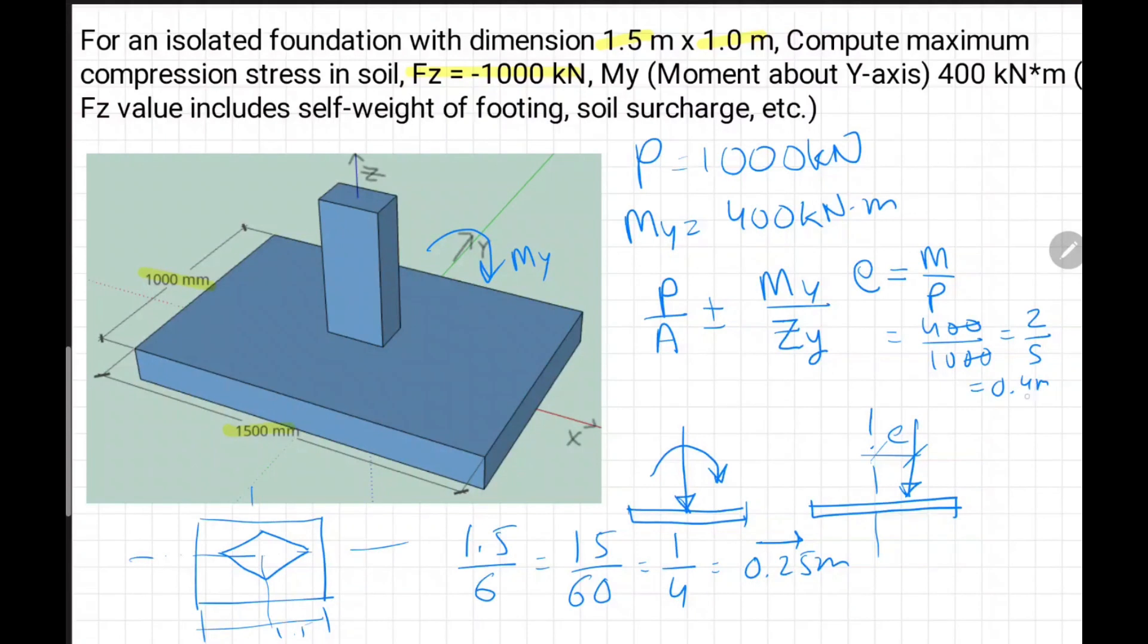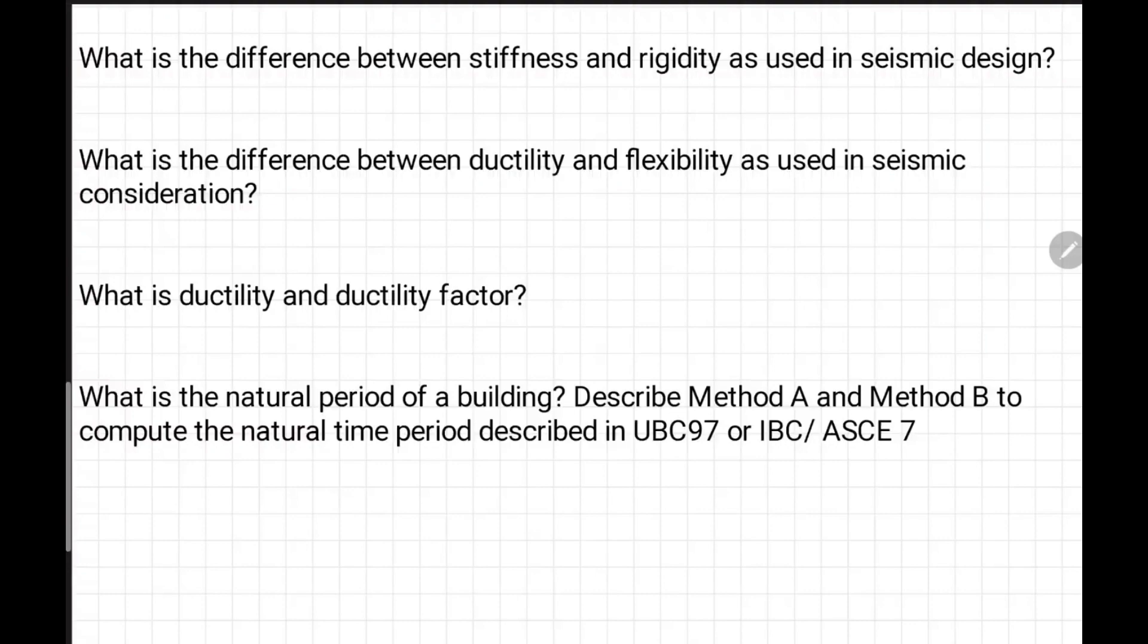We remember whenever we have a rectangle, we call core of section, which is b by 3, b by 3. If force is acting outside the core, it will generate lift-off. Now this dimension is 1.5, so 1.5 over 6 will give us 15 over 60, 1 by 4, 0.25. Our eccentricity is 0.4 meters, which is more than 0.25. In this case we will be having tension, so soil will not take any tension. The pressure diagram will be like this, and we have to solve using equilibrium equations. Don't jump by using this equation. Whenever you have given force and moment, check eccentricity. Are we falling inside the core, our one-third rule? If yes, then we can utilize this. If no, then we have to use equilibrium equations to get maximum compression in soil.